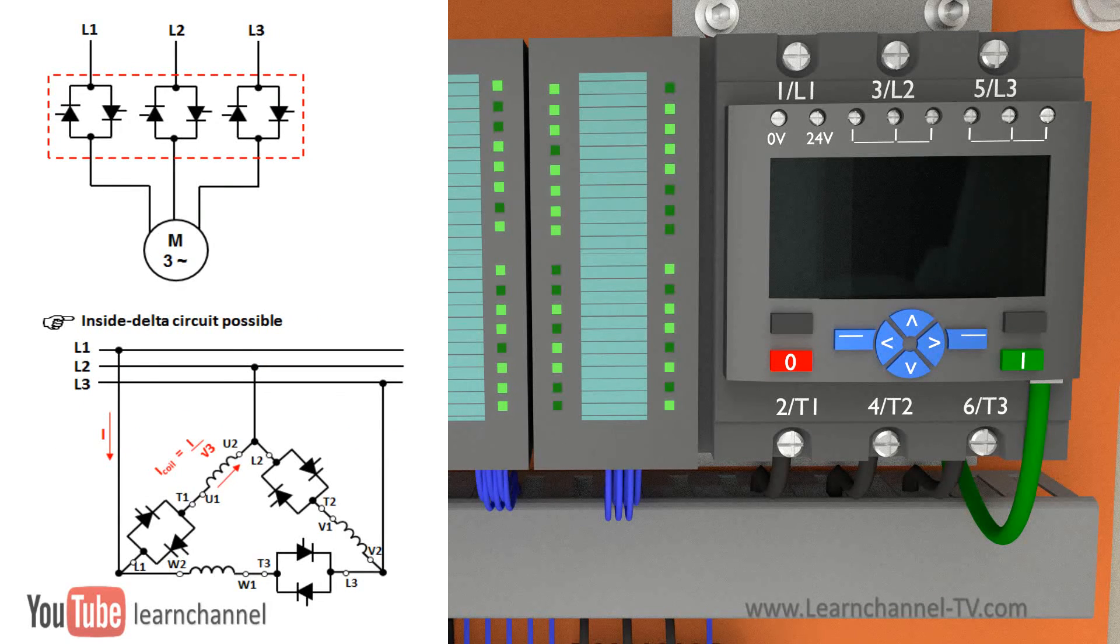Here inside, delta circuit is possible. That means, the phases of the soft starter are connected in series with the individual motor windings. The soft starter then only has to carry the phase current, amounting to about 58% of the conductor current.